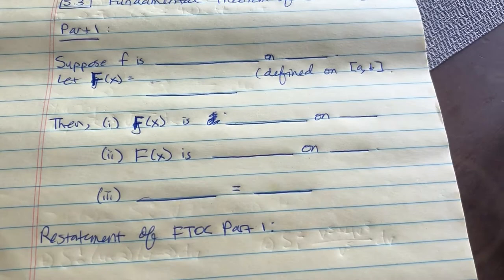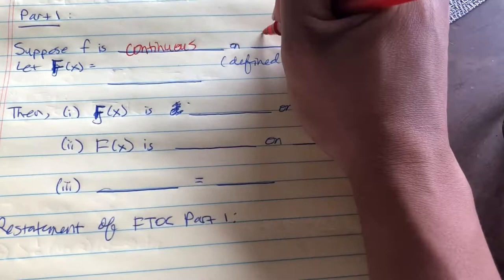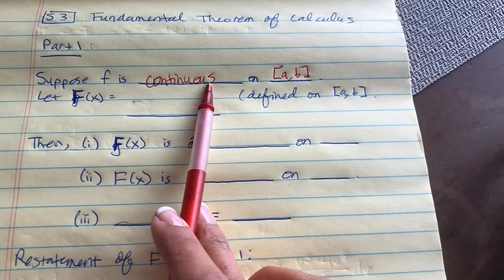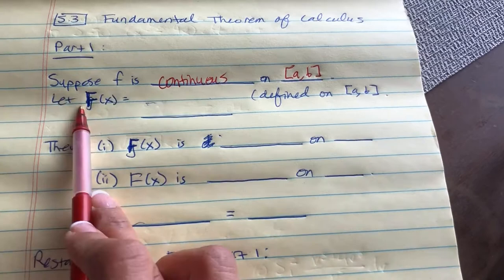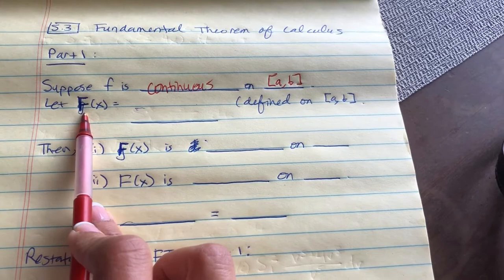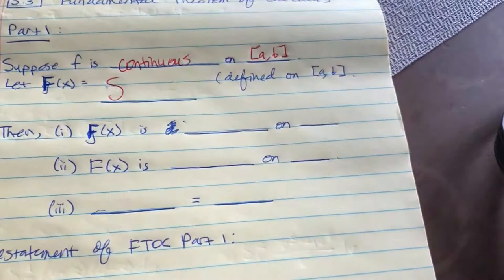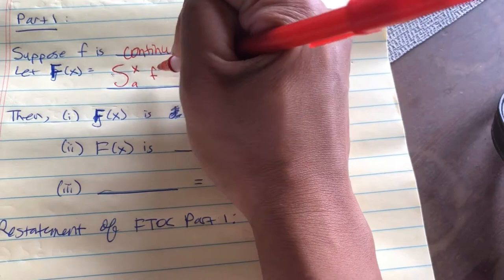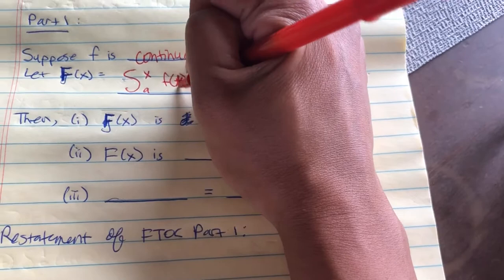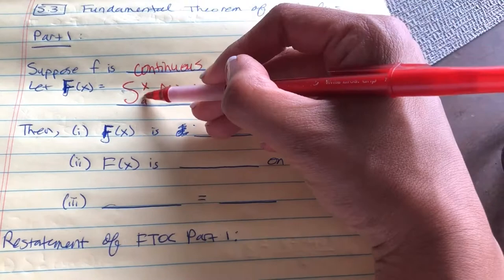So in part 1, suppose f, the function, is continuous on the closed interval a through b. Remember, a lot of the functions that we do, everything has to be continuous, meaning you draw a curve without having to pick up your pen. Now, capital F of x is what we consider the antiderivative. So let capital F of x equal to the integral from a to x — those are the endpoints — of f of t dt. The reason why I'm using t instead of x is because the endpoint has an x in it, so I'm trying to use a different variable.